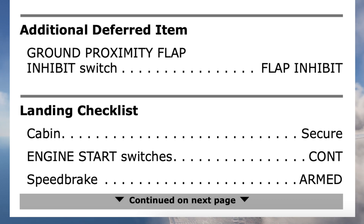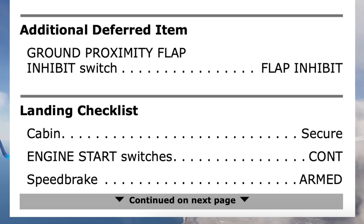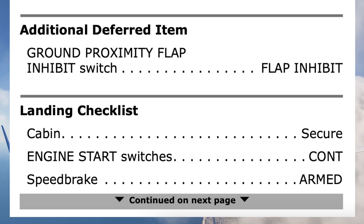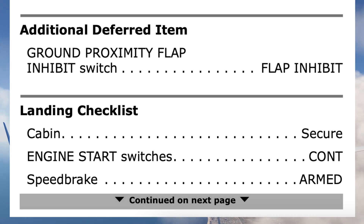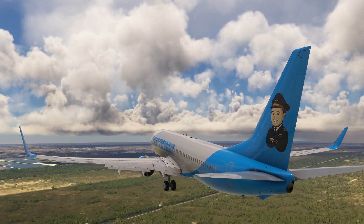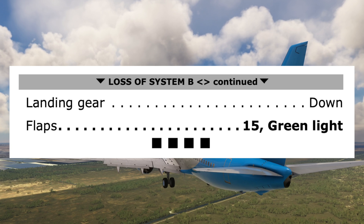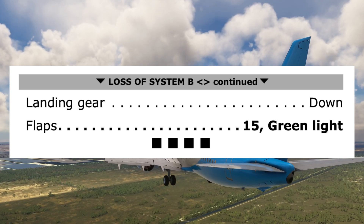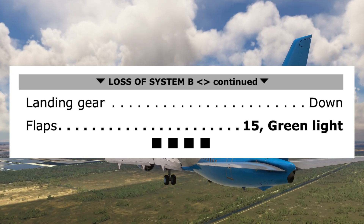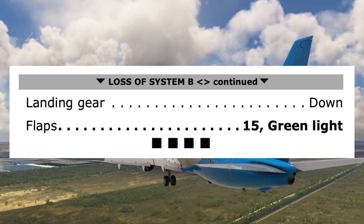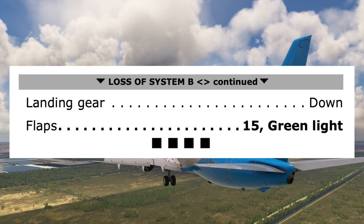Next is the landing checklist. Continue. Landing checklist: cabin secure, engine start switches continuous — they're set to continuous. Speed brake armed — it's armed. Landing gear down — down. Flaps 15, green light. 15, green light. Loss of system B checklist complete.